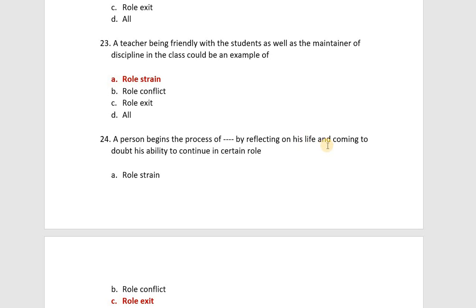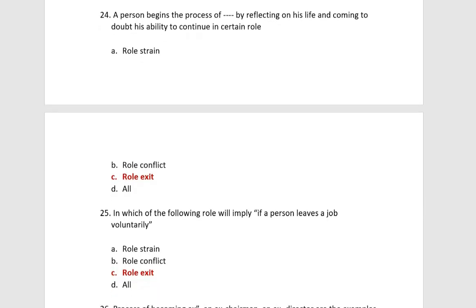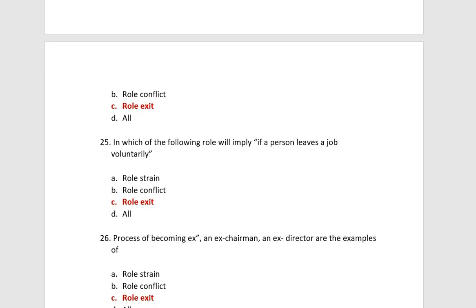The person begins the process of role exit by reflecting on his life and coming to doubt his ability to continue in certain roles. If a person leaves a job voluntarily, that is role exit. If someone leaves a job involuntarily or retires, that is also role exit. The process of becoming an ex-member or ex-director are examples of role exit.